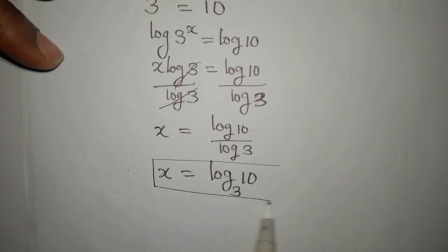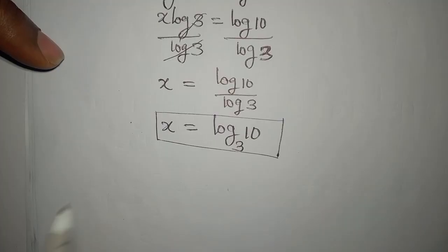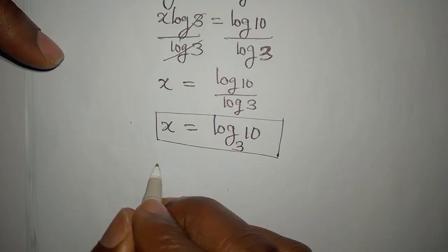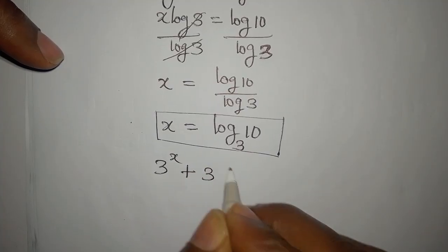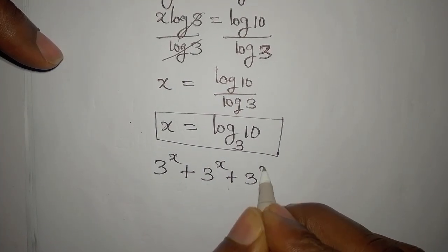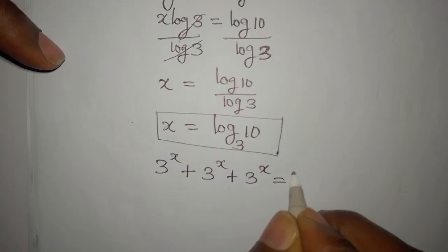Now let's put this back into the equation which is 3 to the power of x plus 3 to the power of x plus 3 to the power of x equals 30.